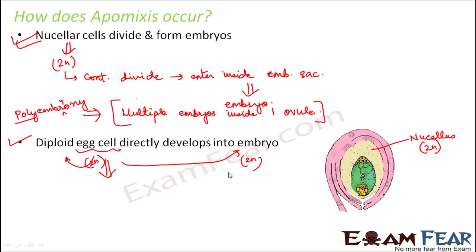If the egg cell is diploid (2n), it can directly develop into an embryo because the embryo is also 2n, so there is no need for fusion. Under normal conditions the egg cell is haploid (n) and needs to fuse with another haploid cell to form a diploid zygote, which then develops into an embryo. But if the egg cell itself is diploid, it can directly develop into an embryo without fertilization.